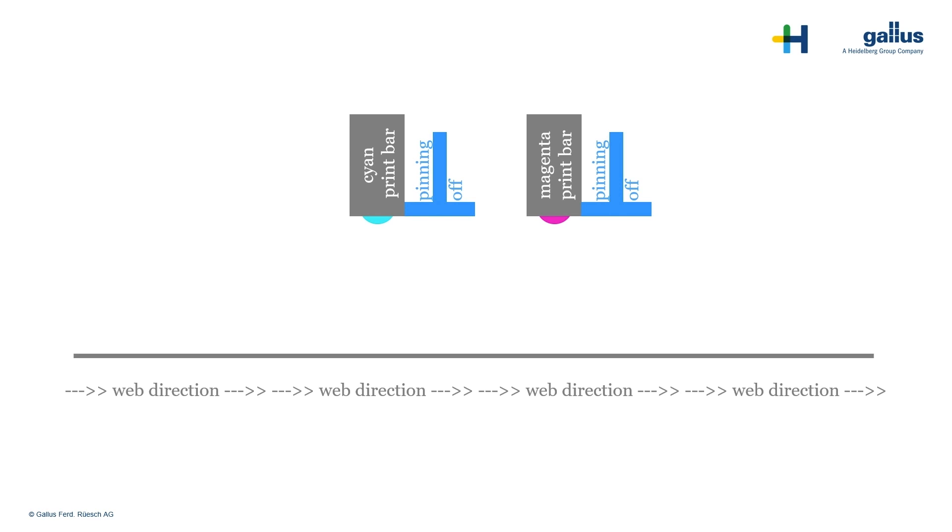To understand the power of pinning, we show you the effect without pinning first. The cyan drop is jetted out of the nozzle. After hitting the substrate, the drop will spread on the substrate. The drop will move on to the next print bar where the magenta drop is jetted. Both drops touch each other, so they mix up. This effect is called intercolour bleeding.